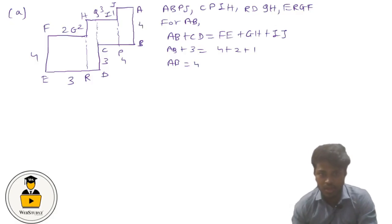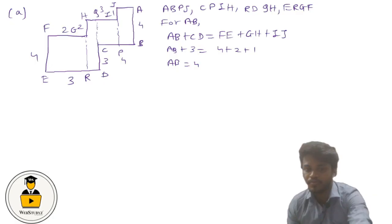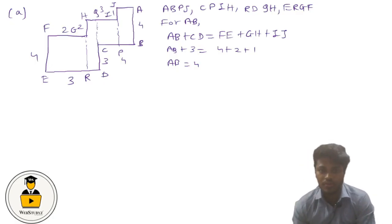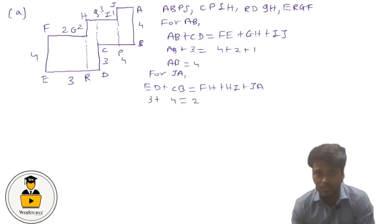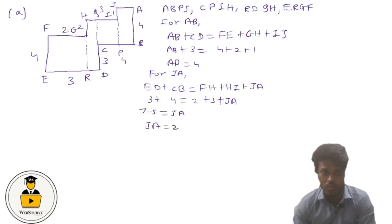Now let us find JA. From the figure we can write that ED + CB equals FH + HI + JA. ED is 3, CB is 4, FH is 2, and HI is 3. So 3 + 4 = 7, and 2 + 3 + JA = 7, giving 7 minus 5 = JA. So JA = 2.